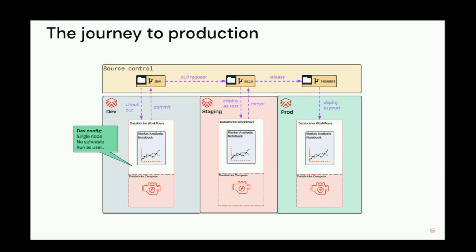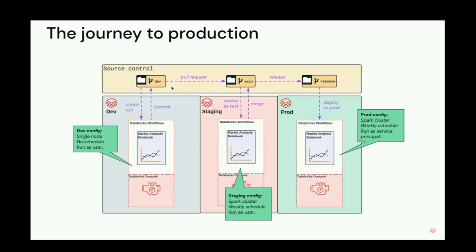There's an important nuance: the configuration of how you run your code depends upon which environment you're running it in. In dev, for a market analysis notebook, you might use a single node, no schedule needed, just running as yourself. In the test environment, you use Spark, add a schedule since you want a weekly report, and still run as yourself. In production, you use the full Spark cluster, include the schedule, and run as a service principal as a best practice.